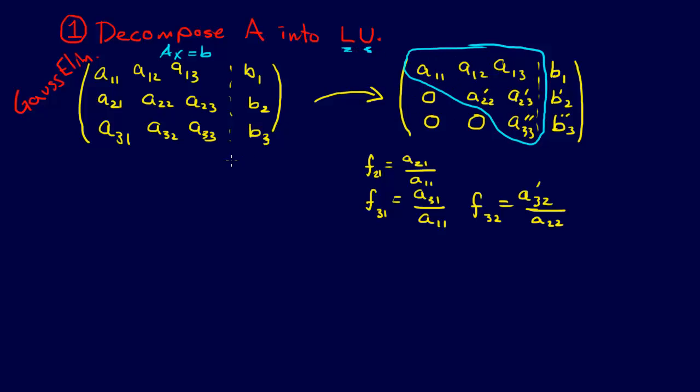Well, it just so happens that this part of the matrix is a nice upper triangular matrix, just like we need here. We need a lower triangular matrix and an upper triangular matrix. This part actually serves as the upper triangular matrix. So U equals just our A11, A12, A13, A22 prime, A23 prime, A33 prime, with zeros below. This is our matrix U from our Gauss elimination.